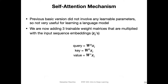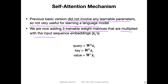There was one big problem with the basic version of self attention: it did not involve any learnable parameters. The basic form was not very useful for learning a language model — for instance, if we want to develop a language model supposed to translate text, how do we make it better if there are no learnable parameters? So here we are introducing three trainable weight matrices that are multiplied with the input sequence embeddings, the x's that we had before.